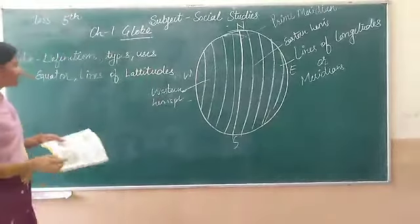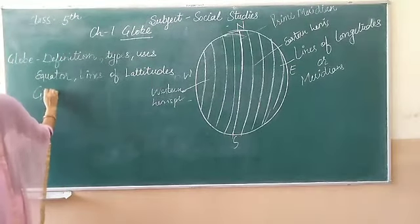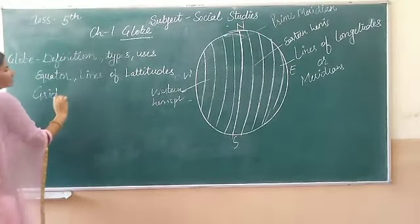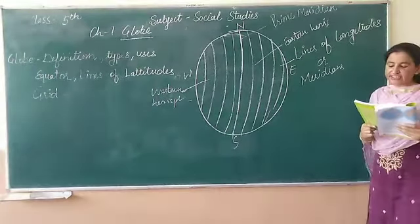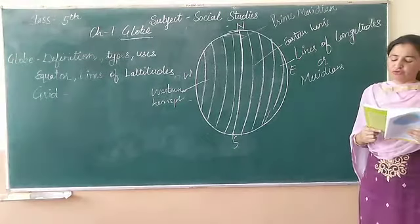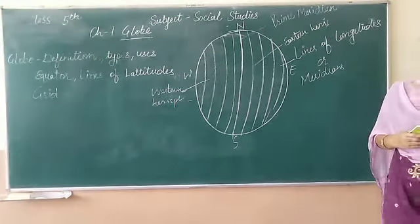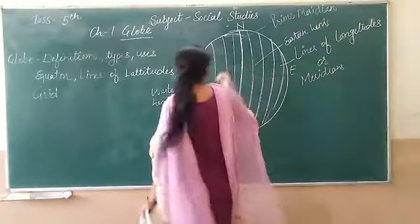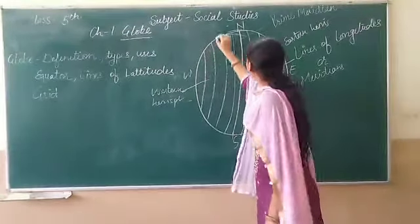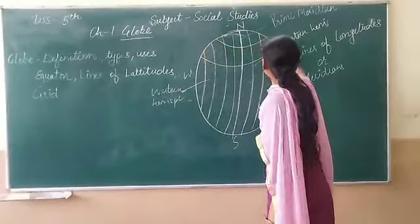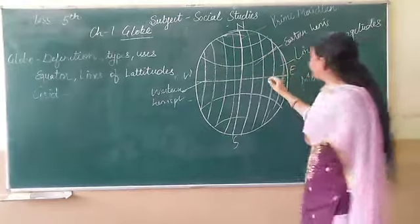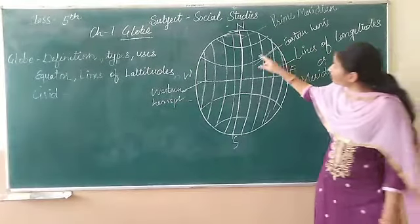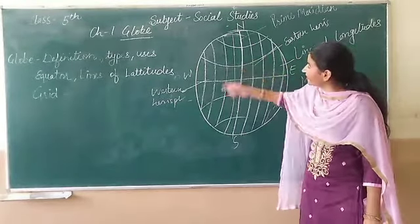Our next topic is grids. The latitudes and longitudes intersect each other at right angles, forming a network called grids. Here are lines of longitudes and these are lines of latitudes. Where lines of longitudes and lines of latitudes intersect, the whole picture we see is the grid.